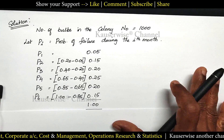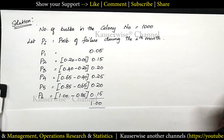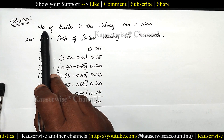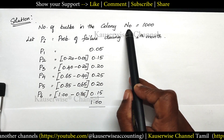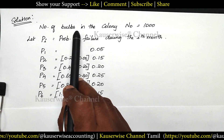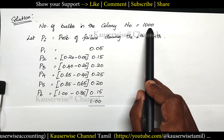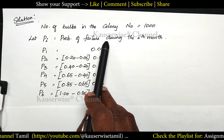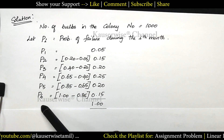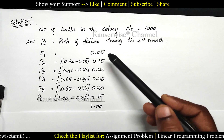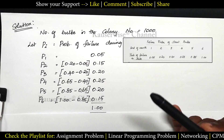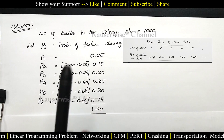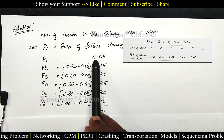Now let us see the solution. Before we calculate the individual replacement cost and group replacement cost, we need to do certain working notes. Working note 1: N0 represents total number of bulbs in the colony — 1000 bulbs. PI refers to probability of failure during the ith month. In this problem they have given cumulative probability for each and every month. We need to find out the probability for each and every month by comparing the current month with the previous month. For the first month they have given 0.05.